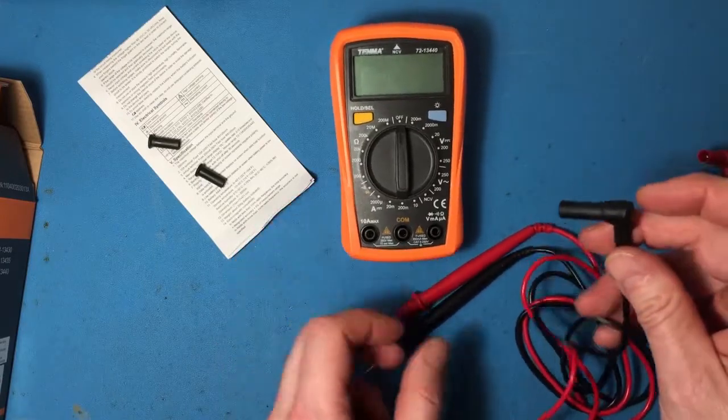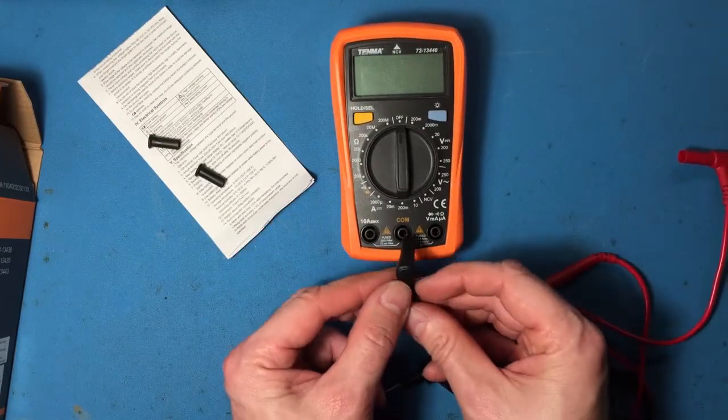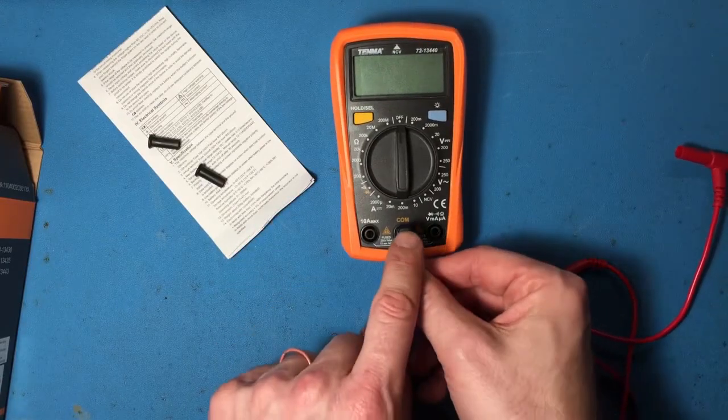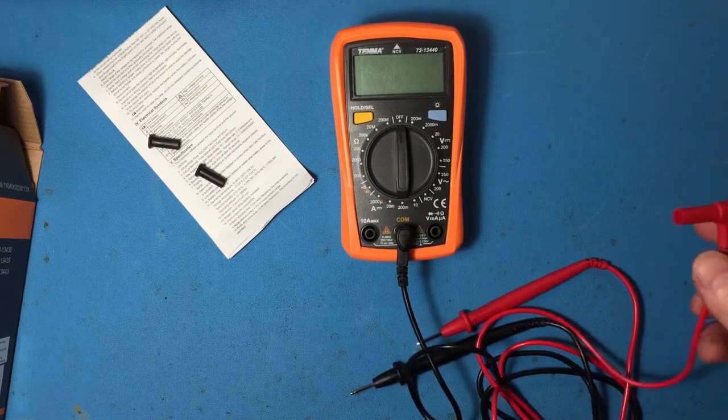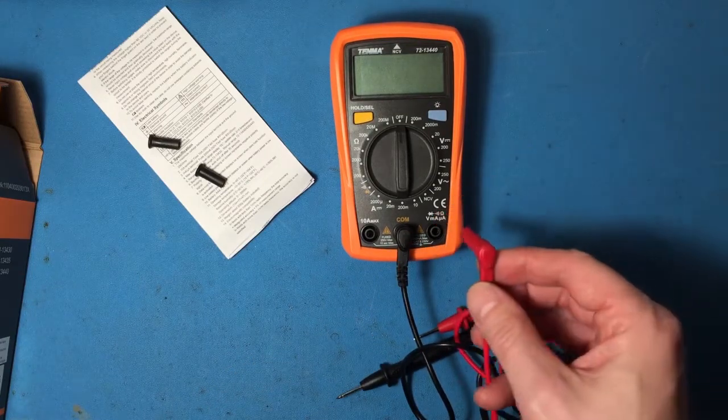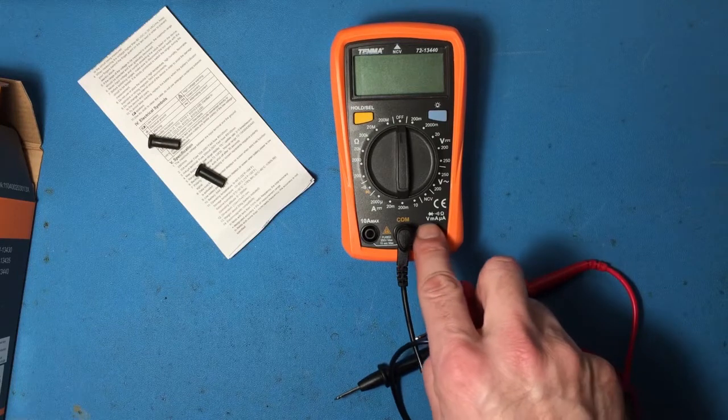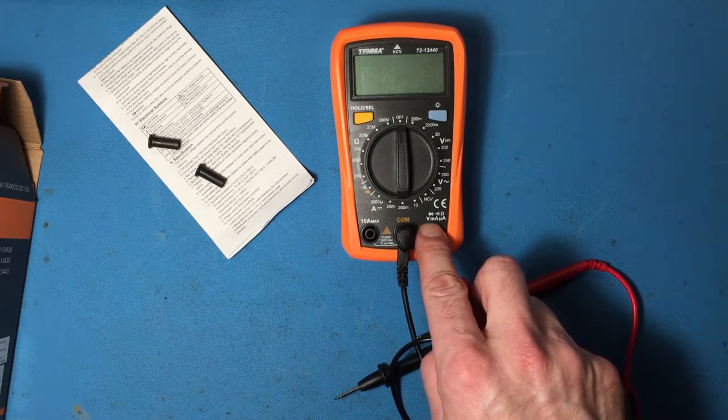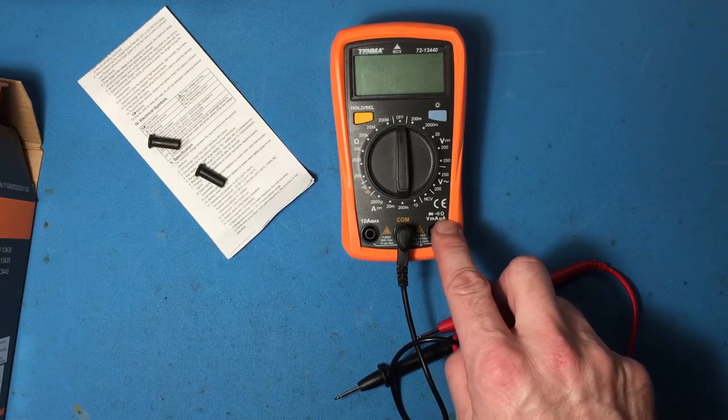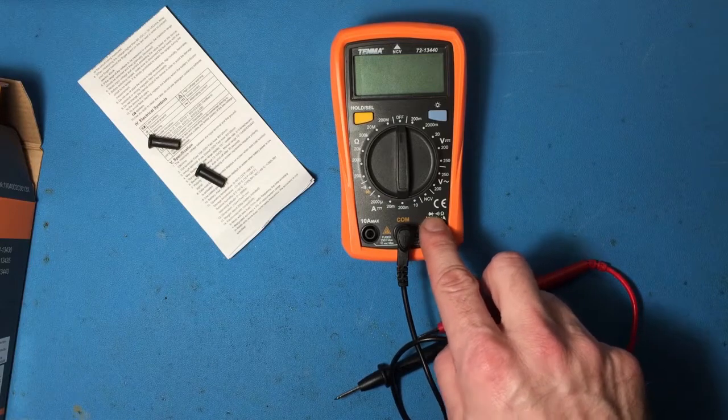For most of the things that we're going to do, we're going to plug the black lead into the comm terminal or the common terminal. It's the one in the center. Then the red lead is going to plug into the one on the right which can measure volts, current and milliamps or microamps, ohms, diodes, and continuity.